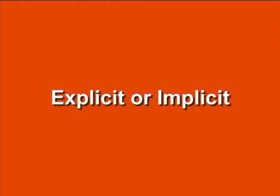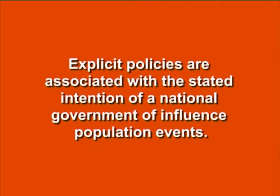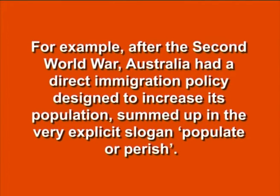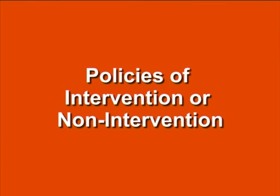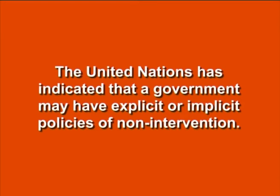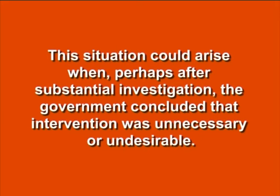Explicit policies are associated with the stated intention of a national government to influence population events. For example, after the Second World War, Australia had a direct immigration policy designed to increase its population, summed up in the very explicit slogan 'Populate or Perish.' The United Nations has indicated that a government may have explicit or implicit policies of non-intervention. This situation could arise when, perhaps after substantial investigation, the government concluded that intervention was unnecessary or undesirable.